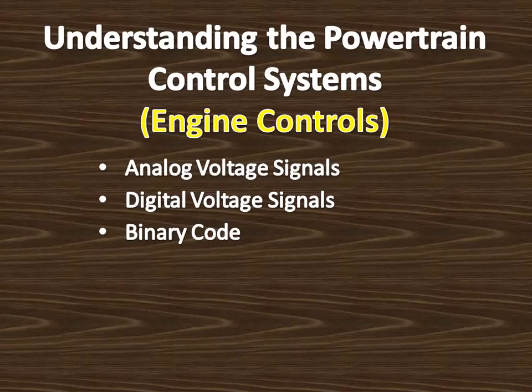A numeric value may be assigned to digital signals. For example, an off or low digital signal may be given a value of 0, and an on or high digital signal may be given a value of 1. This assignment of numeric values to digital signals is called binary coding. The word binary means two values, and in the binary coding system the two values are 0 and 1. In an automotive computer, information is transmitted in binary codes. Conditions, numbers, and letters can be represented by a series of 0s and 1s. Each individual on or off condition is called a bit. A computer transmitted the value of 0, 1, 1, 0, 0, 1, 0, 1 — these groups of bits are called a byte. The computer can process bytes of information according to a program.